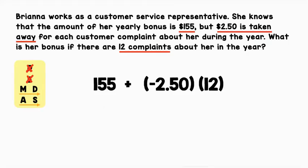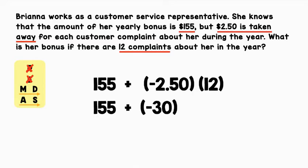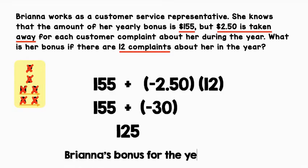I'm going to bring down my 155 so I can save that for later. Now I have negative 2.50 times 12, which gives us negative 30. I can now cross off multiplication and division. Lastly, we have addition and subtraction from left to right. I only see addition, so 155 plus negative 30 equals 125. Brianna's bonus for the year is $125.